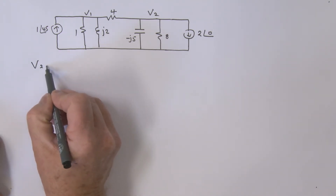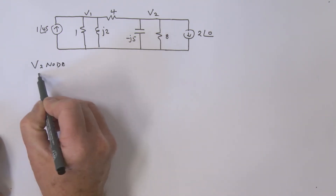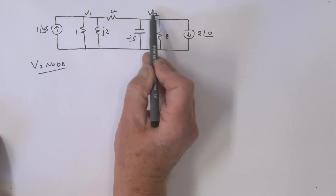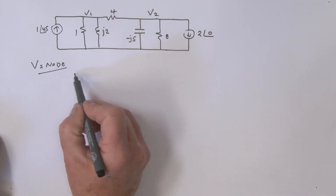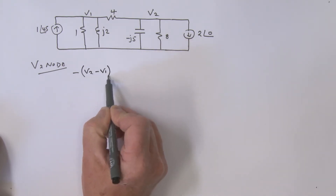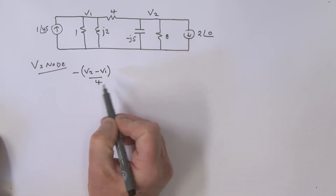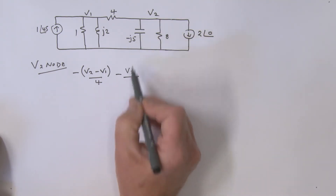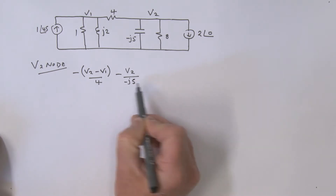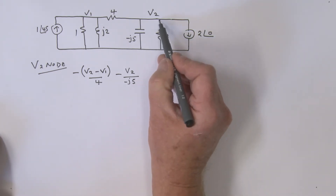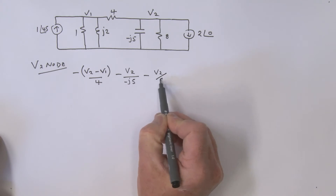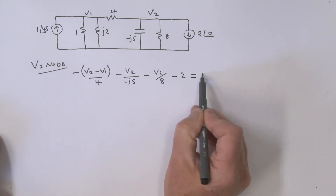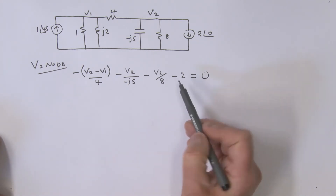Now let's look at the v2 node. The current through the 4-ohm resistor is minus (v2 minus v1) divided by 4. The current through the capacitor is minus v2 over minus j5. The current through the 8-ohm resistor is minus v2 over 8. The 2-amp source is going out, so that's minus 2. All equal to zero.